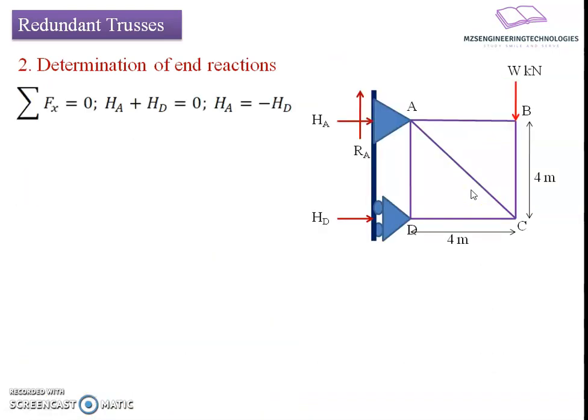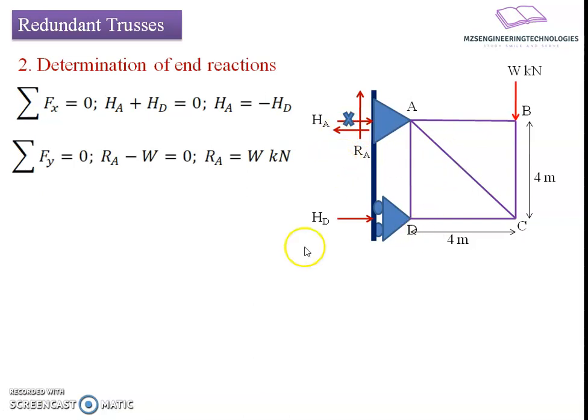Once we have the statically admissible case, we find the support reactions by applying static equilibrium equations to the whole geometry. From equilibrium of horizontal forces, we get the relation HA plus HD equals 0. HA is directed towards the right and HD is also directed towards the right, with no external horizontal force applied — so HA equals HD but opposite in direction.